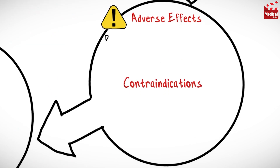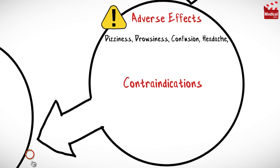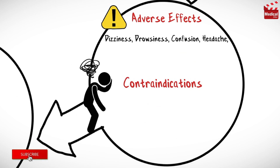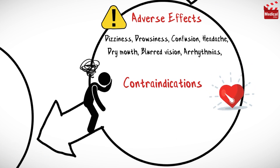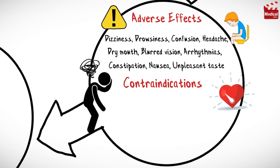Cyclobenzaprine may cause dizziness and drowsiness, confusion and headache, dry mouth, blurred vision, arrhythmias, constipation, nausea, and unpleasant taste.